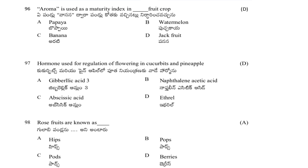Aroma is used as a maturity index in which crop? Options: papaya, watermelon, banana, or jackfruit. The answer is D — jackfruit. Maturity of jackfruit can be easily determined by its aroma.